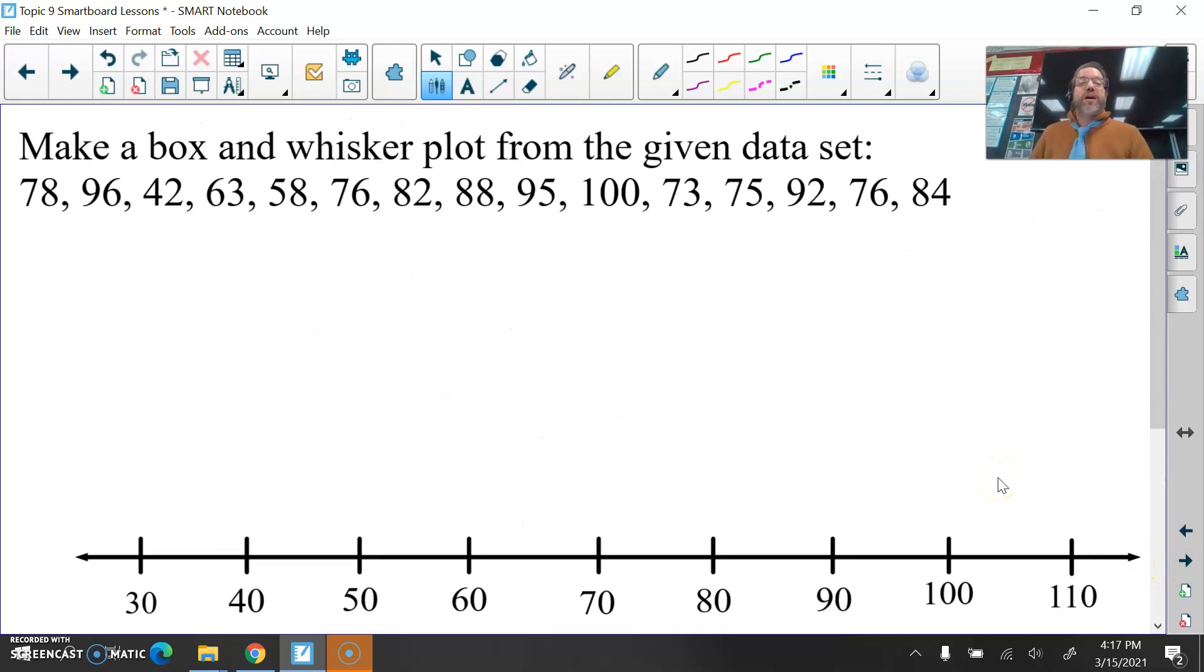Okay, so let's make a box and whisker plot from this given data set. Let's say these are a bunch of test scores. Let's say we had a 100 point test and these are the results. We have 15 numbers in this data set. I want to list these from least to greatest. All right, so I'm going to do the same thing I've done in previous lessons. I'll cross them off as I go and line them up with my original list. What's my lowest score here? I see a 42.